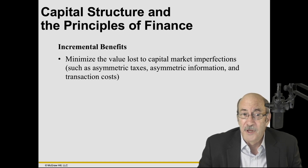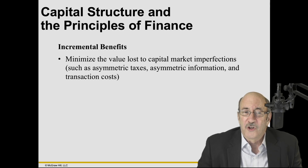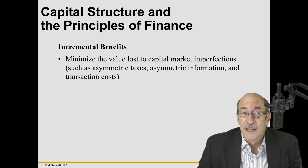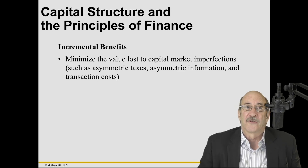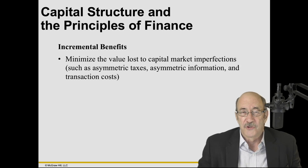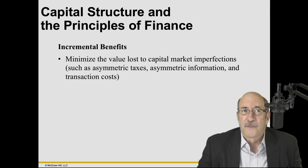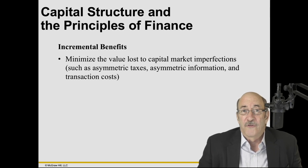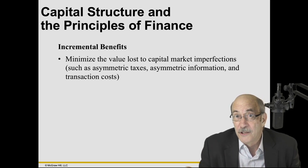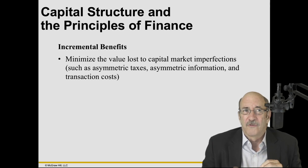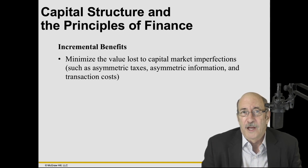In terms of incremental benefits, what is it about the capital structure decision that relates to incremental benefits? We are trying to minimize the value loss to capital market imperfections. What are capital market imperfections? Transaction costs, agency costs, information asymmetry. We usually start our models out by assuming a very perfect marketplace that has none of these imperfections, and then we start relaxing these assumptions about the perfect capital market to better reflect reality.